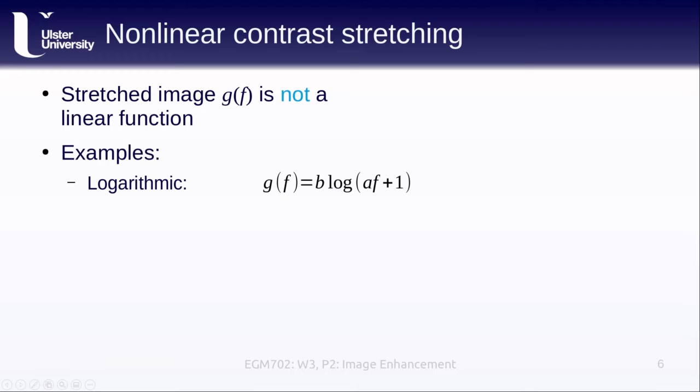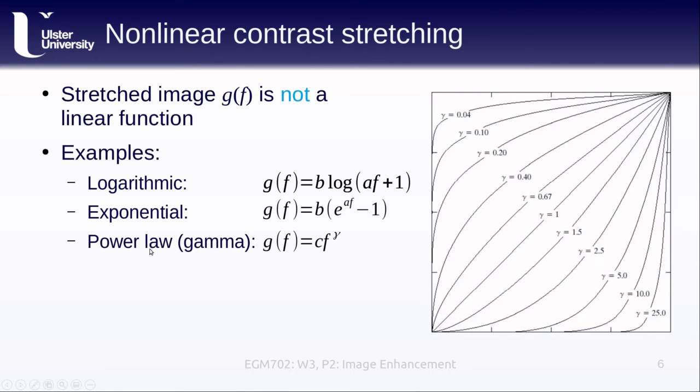In addition to linear contrast stretching, we can do something called nonlinear contrast stretching. This is where our stretched image is not a linear function of f. Some different examples could be a logarithmic stretch, where we take b times the log of a times f plus 1. We could also use an exponential contrast stretch, where we have b times e raised to the power of a times f, and again minus 1. We can also use something called a power law, where we have our transformed image is just some constant c multiplied by the original image value raised to a power gamma.